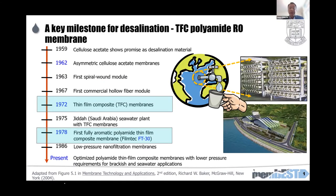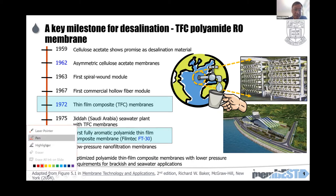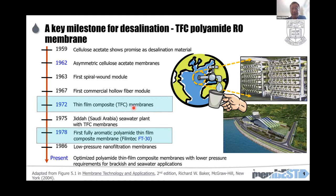Water scarcity is a very big problem. To address that, many places have started desalination and water reuse programs. In the 1970s, there was a very important invention — thin-film composite membranes. Later, fully aromatic polyamide thin-film composite membrane chemistry was developed. Since then, this chemistry has been dominating the market. More than 40 years later, we are still using TFC polyamide membranes.